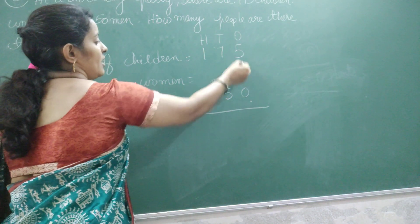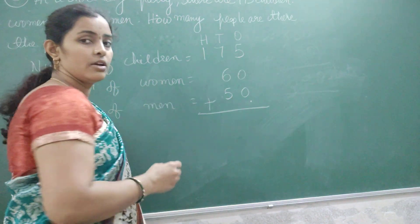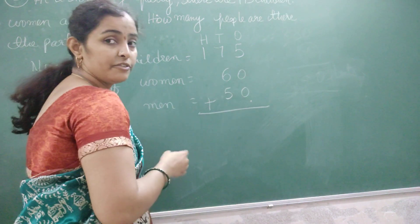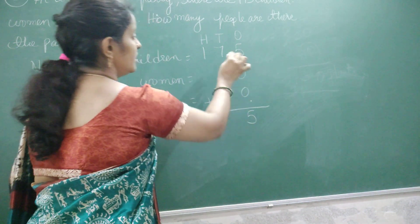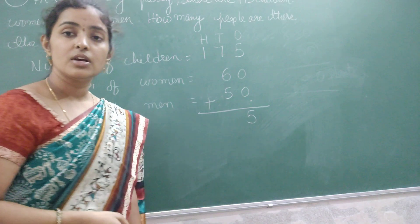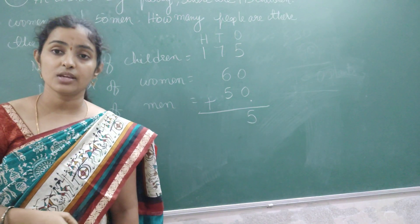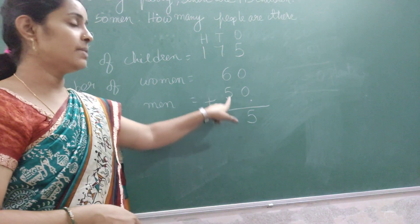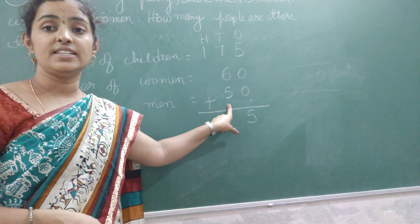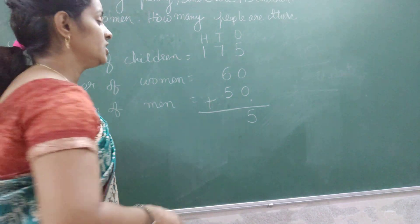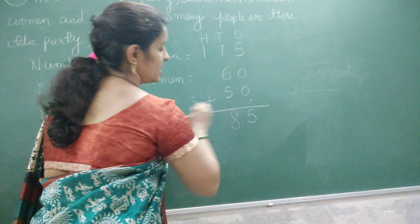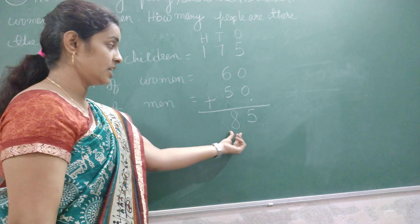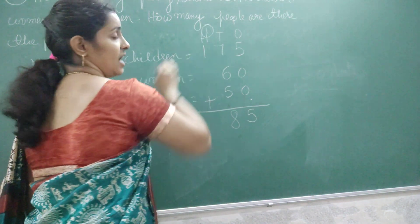That is 5 plus 0 plus 0 is 5. Then 7 plus 6 plus 5 is how much? 7 plus 6 is 13, and 13 plus 5 is 18. 8 is in the ones place, take it down, and carry 1 to the tens.